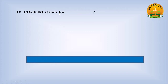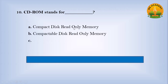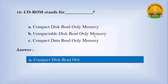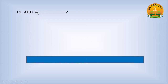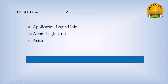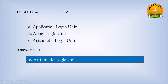CD-ROM stands for dash. Option A Compact Disk Read-Only Memory, option B Compatible Disk Read-Only Memory, option C Compact Data Read-Only Memory. Answer: A. Number Compact Disk Read-Only Memory. ALU is dash. Option A Application Logic Unit, option B Area Logic Unit, option C Arithmetic Logic Unit. Answer: C. Number Arithmetic Logic Unit.